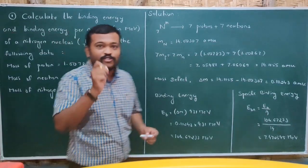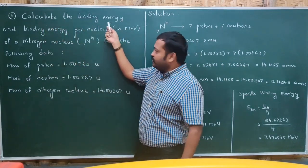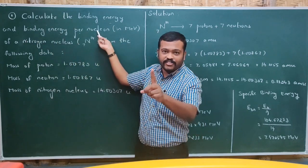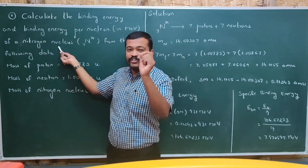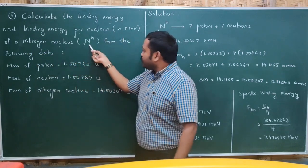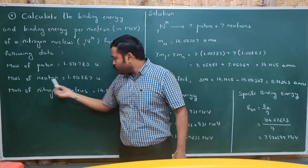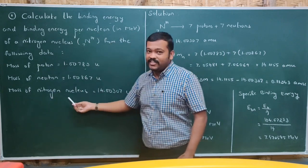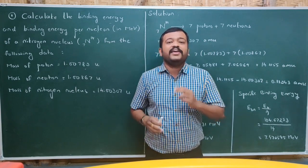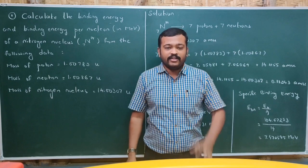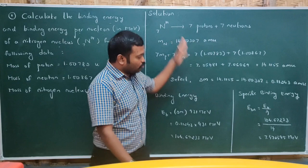This problem is on binding energy. The question asked is: calculate the binding energy and binding energy per nucleon (specific binding energy) in mega electron volts of a Nitrogen-14 nucleus, given mass of the proton, mass of the neutron, and mass of the nucleus. The binding energy formula is delta M into 931 MeV, so first we need to calculate mass defect delta M.